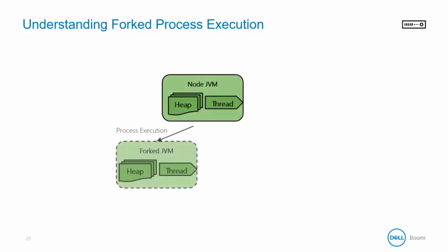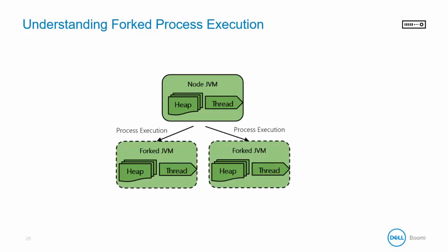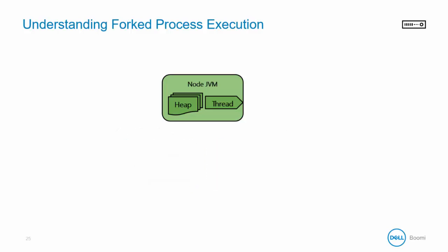With forked executions turned on, the main node will spin up a new forked JVM for each execution. The main node always exists because it must maintain status and communication to the other nodes in the cluster. In this example, the main node spins up two forked JVMs for process execution. When the process executions are completed, the forked JVMs terminate and return the heap back to the machine resources.